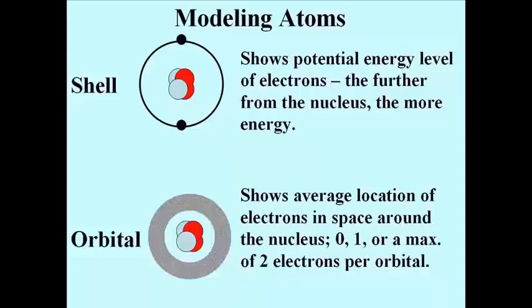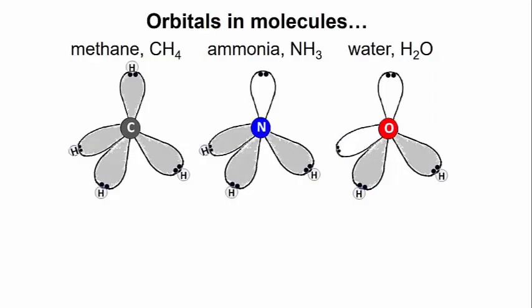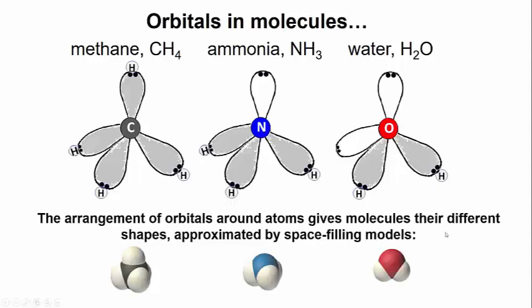You might recall that more than one orbital may contain electrons at the same energy level. In this illustration, electrons are shared between atoms in these covalent compounds in orbitals that give the molecules their shapes. The space filling models along the bottom of the slide emphasize the different molecular shapes.